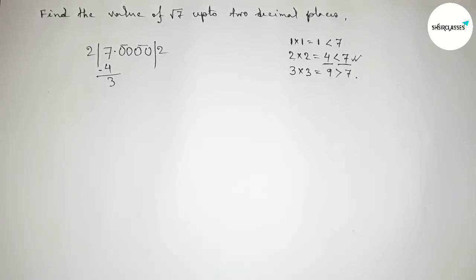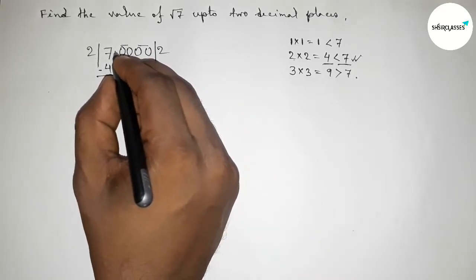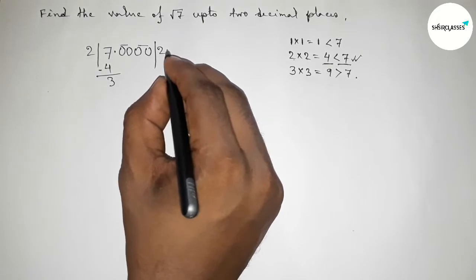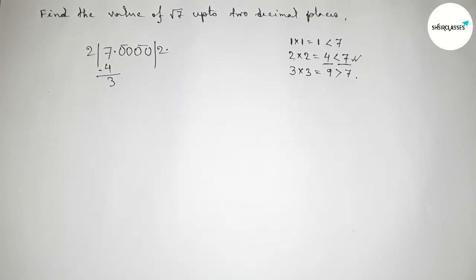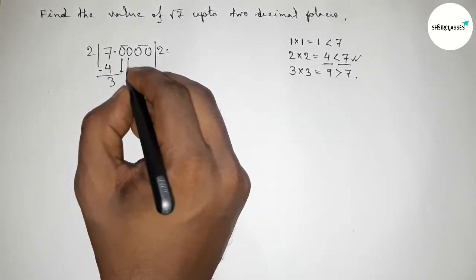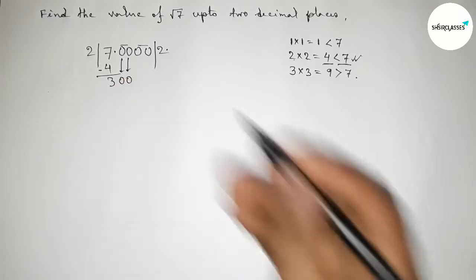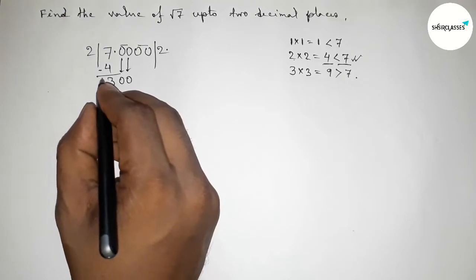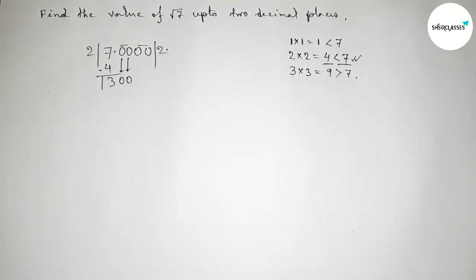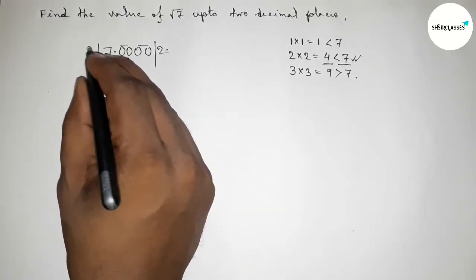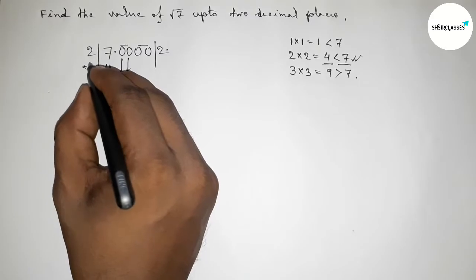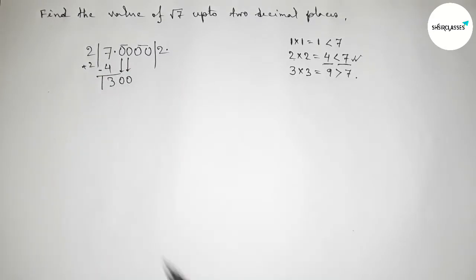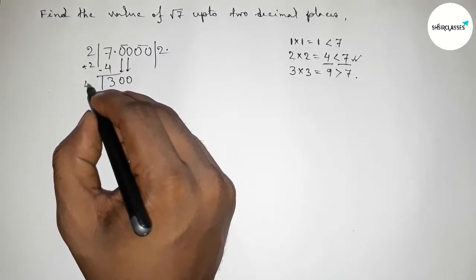Subtracting: from 7 minus 4 equals 3. The point goes here. Now bring down the first pair of zeros, and draw the division line. The number so far is 2, so we add 2 plus 2 equals 4. The new divisor starts with 4.